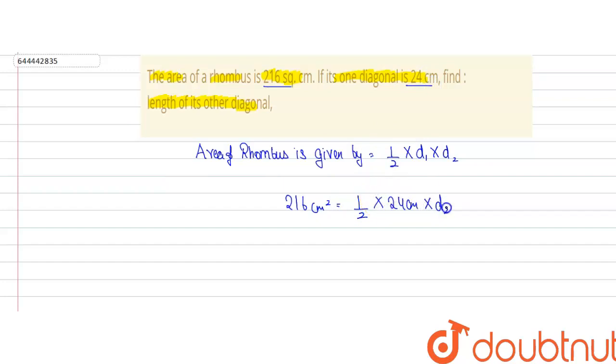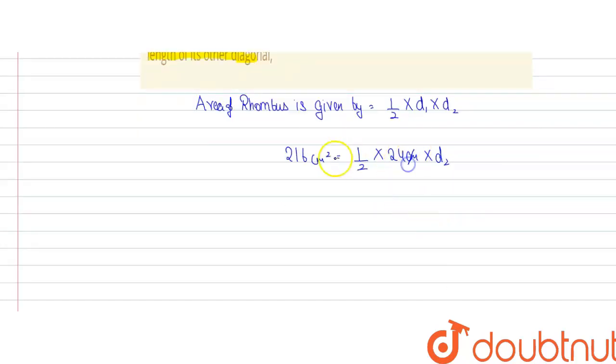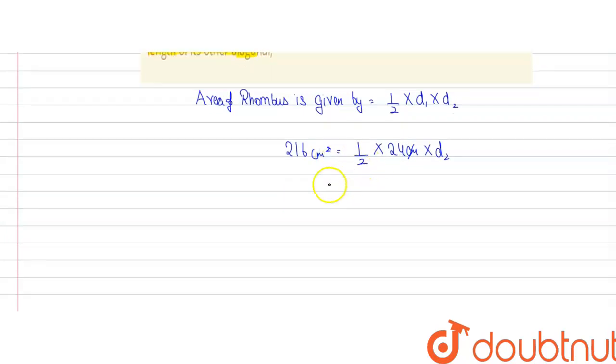And we have to find the second diagonal length, which is d2. So from this equation, the value of d2 will be equal to 216 × 2 ÷ 24 centimeters.